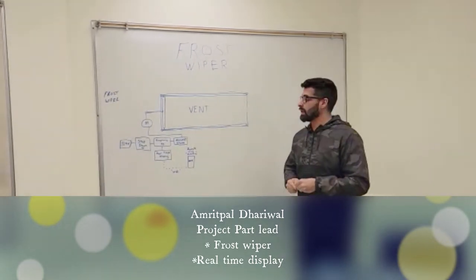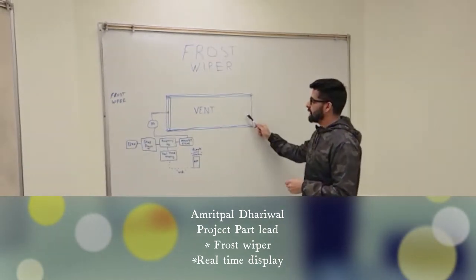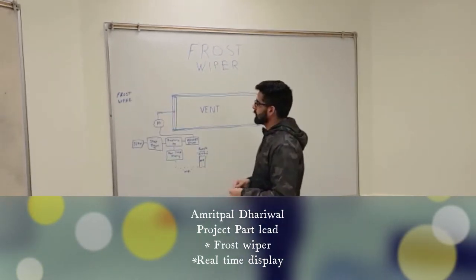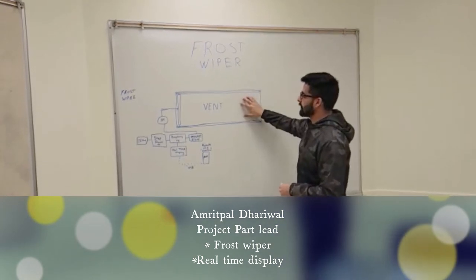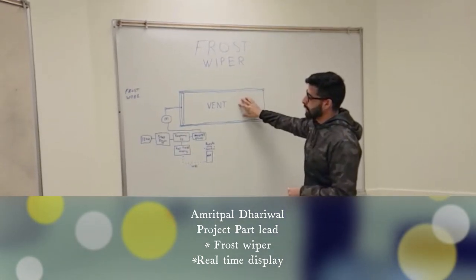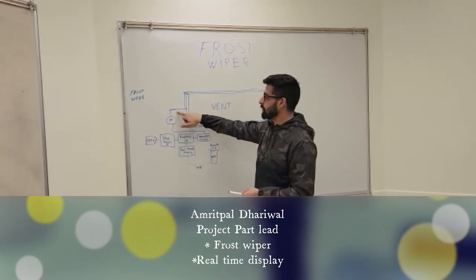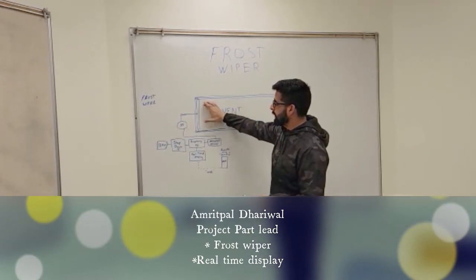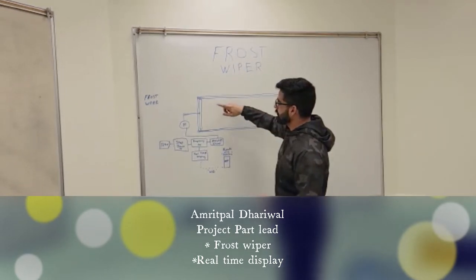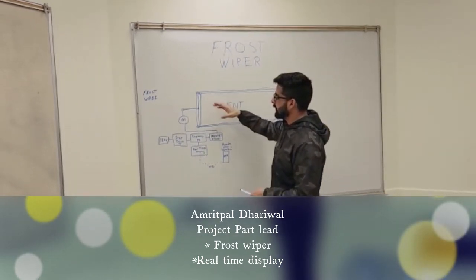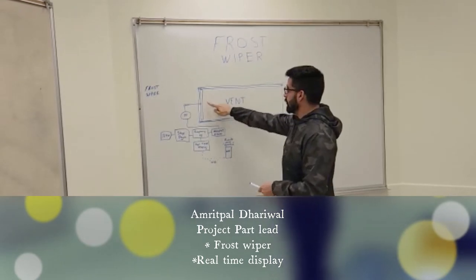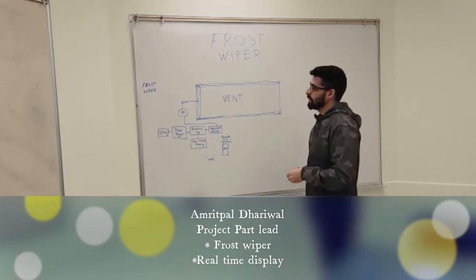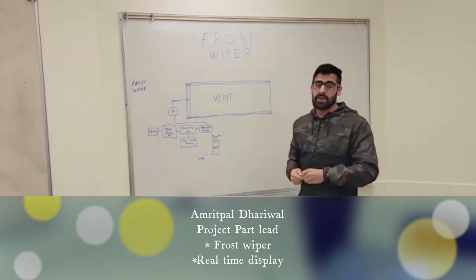My subsystem is the frost wiper. When the vent gets clogged up, my part is to have a linear motion actuator driven by a motor that has a brush system run on rails, so when it's activated the brush moves back and forth. Right now we're in the process of doing our calculations to figure out how much force we actually require for that.